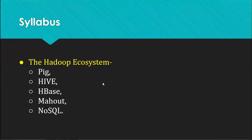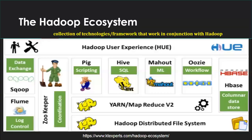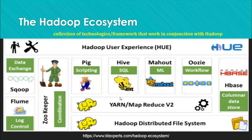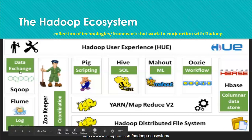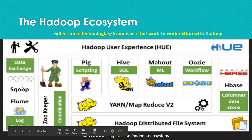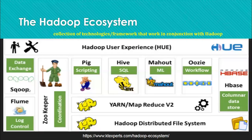In the last lecture we started with the Hadoop ecosystem where we saw that in a Hadoop ecosystem there are different components like Pig, Hive, Mahout, Oozie, HBase, YARN, HDFS, ZooKeeper, Flume, and Sqoop. These are the different things which, combined together, we call the Hadoop ecosystem.